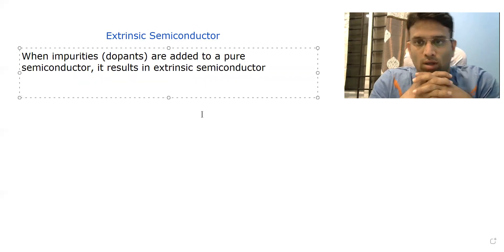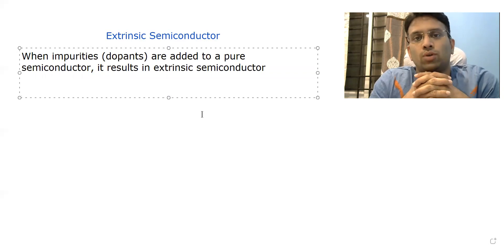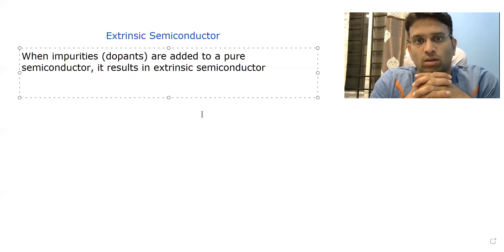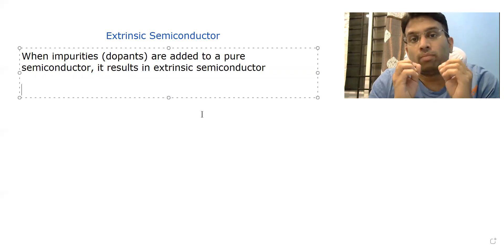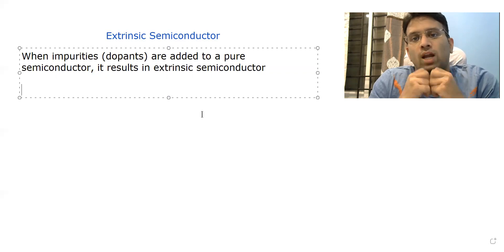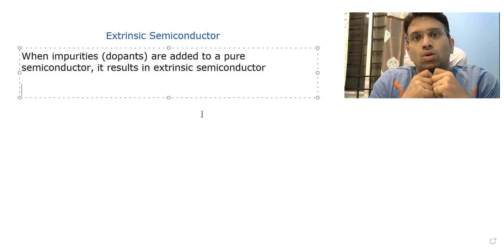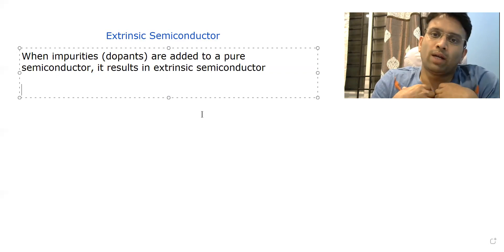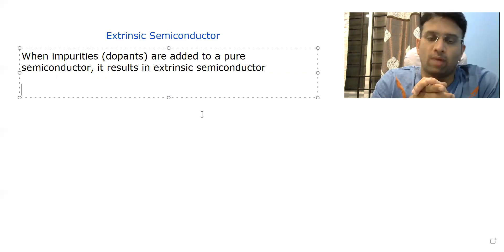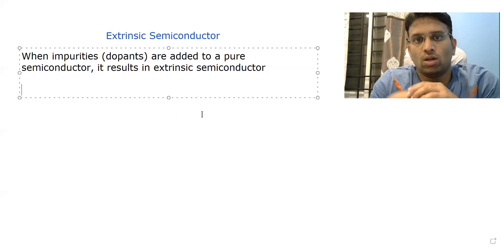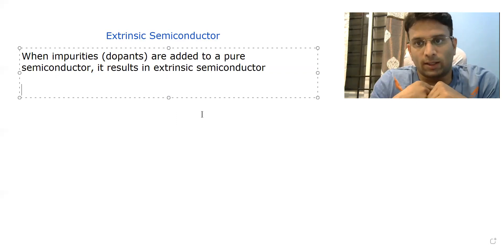This process of adding particular impurities — not just any impurities — to an intrinsic semiconductor is called doping. And by doping, we convert an intrinsic semiconductor to an extrinsic semiconductor.